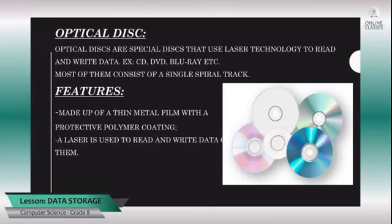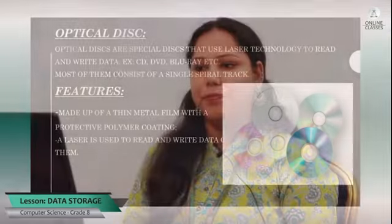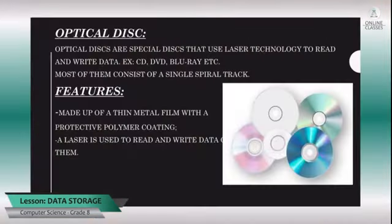Next, coming to the optical disk: optical disk means we make use of laser to write the contents — usually red laser or blue laser. The devices under optical disk are CD, DVDs, Blu-ray disk, etc. These devices usually consist of single or more spiral tracks. They are made up of a thin metal with a protective polymer coating, and a laser is used for writing the contents into the disk.